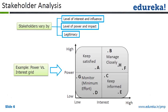One reason this prioritization is done is because a project manager has to interact with so many people — it is not possible to attend to each and every activity or meet each and every person every day. So he has to prioritize his time, and the power-interest grid is a way of doing that.